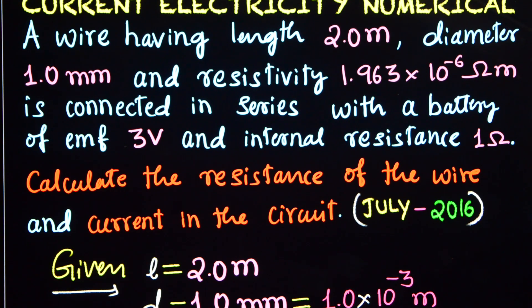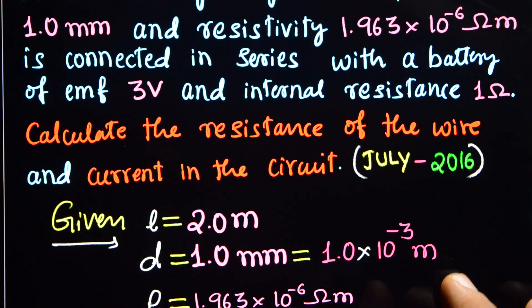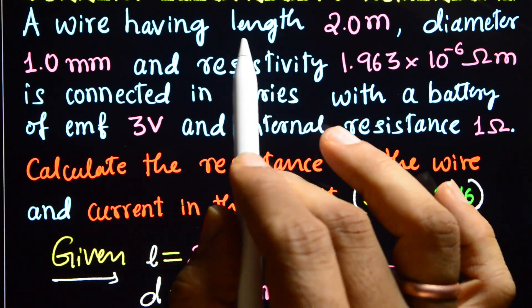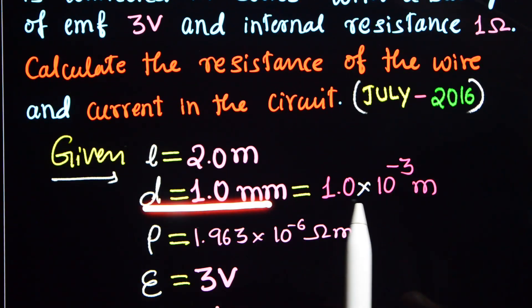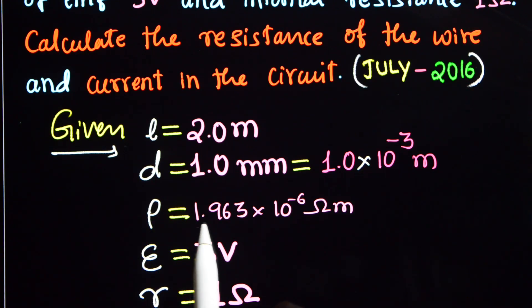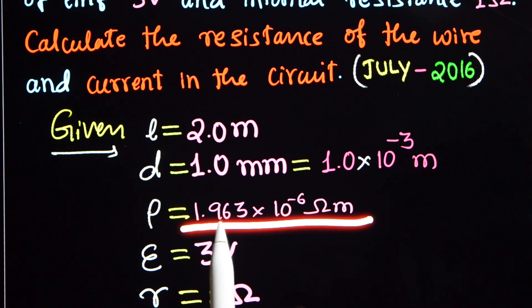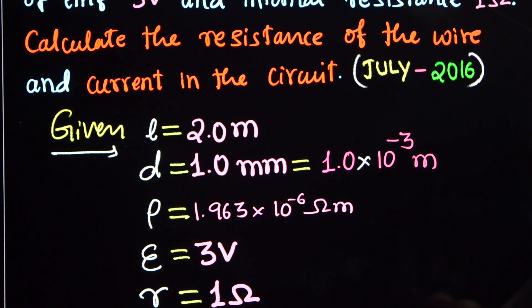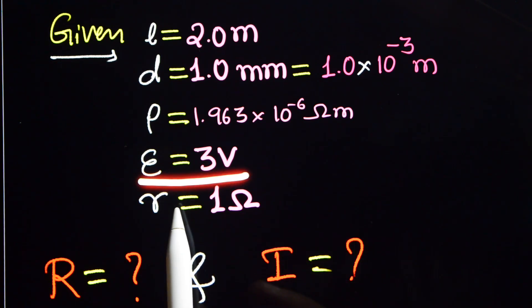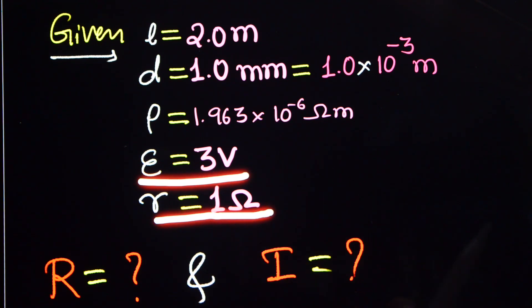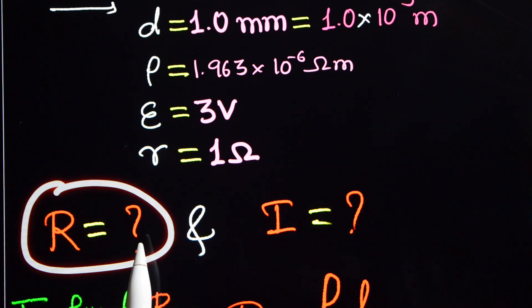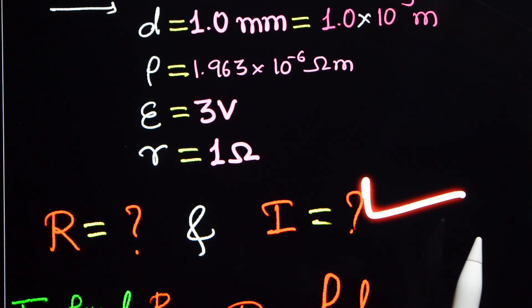Let's write down the given quantities. The length of the wire is 2 m, the diameter is 1 mm, that is 1 x 10⁻³ m, and the resistivity of the wire is 1.963 x 10⁻⁶ ohm meter. The EMF of the cell E is equal to 3 volt, and the internal resistance r is equal to 1 ohm.